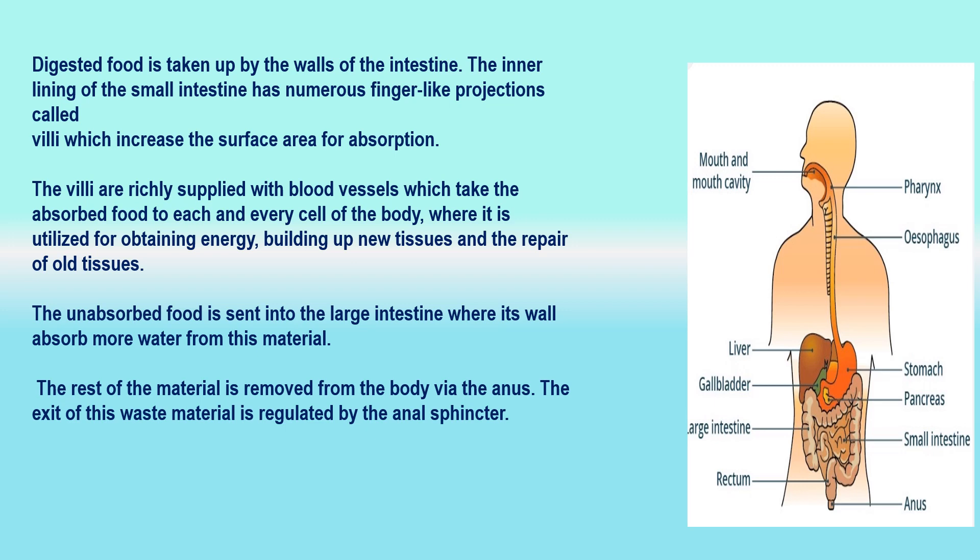The undigested food passes from the small intestine into a wider tube called the large intestine. The walls of the large intestine absorb most of the water from the undigested food, causing it to become almost solid. The last part of the large intestine, called the rectum, stores this undigested food for some time. The act of expelling the faeces is called defecation, and the exit of faeces is controlled by the anal sphincter.